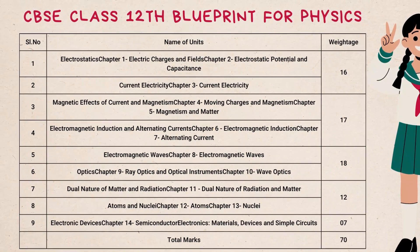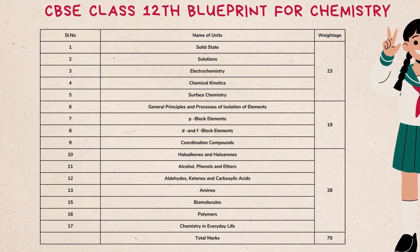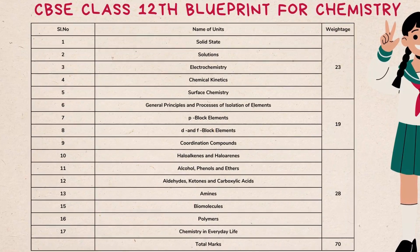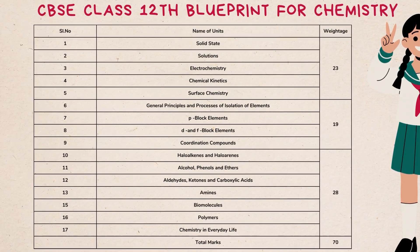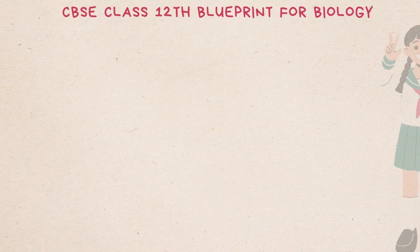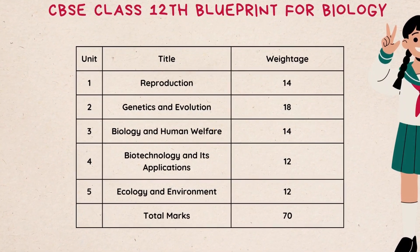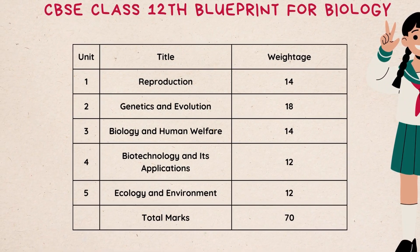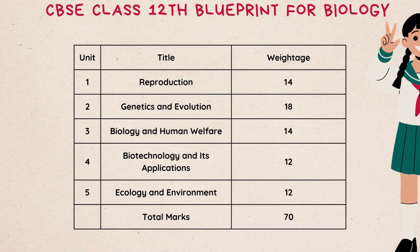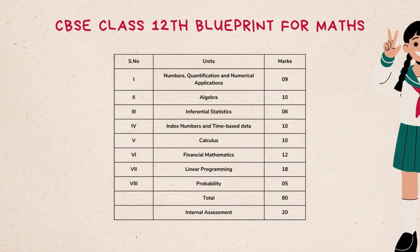Students can go through the CBSE Class 12th blueprint for Chemistry subject given on screen. CBSE Class 12th Biology consists of five units — check out the mark distribution from the CBSE Class 12th blueprint for Biology given on the screen.